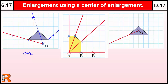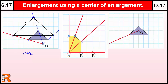Then we can redraw our shape by joining up the dots to make the new triangle. So there's the new triangle, and this triangle is going to be twice as big. Just check that: the base of this triangle is 4, the base of this triangle is 8. This was 2 high, this is now 4 high. So we've drawn a triangle that is twice as big, but specifically in the position denoted by this centre of enlargement.